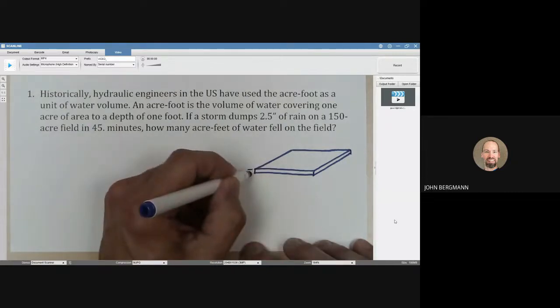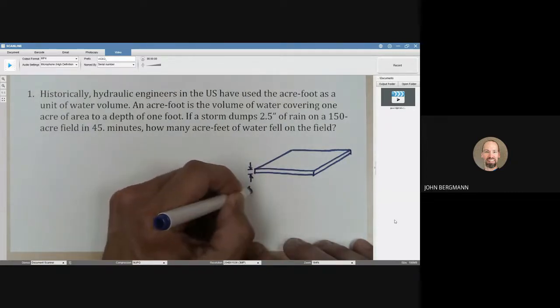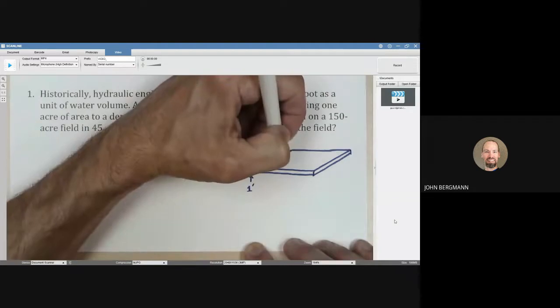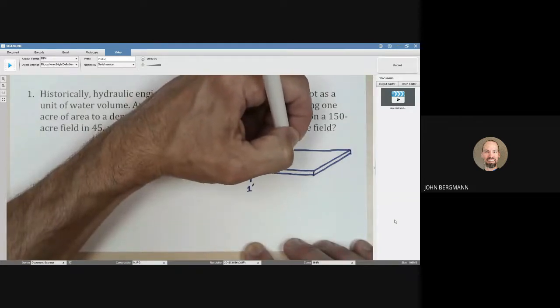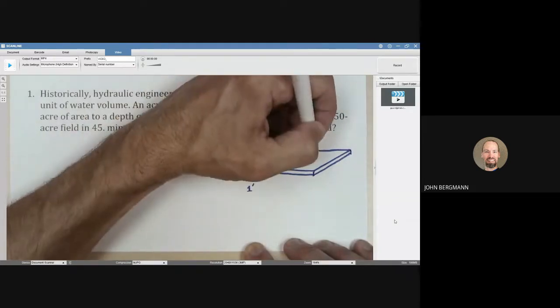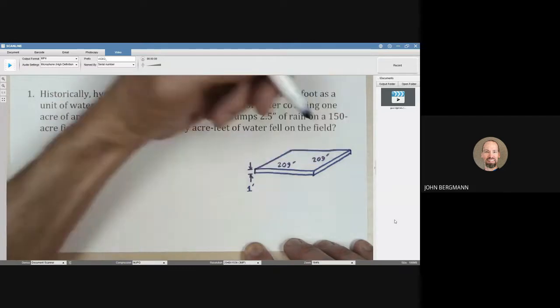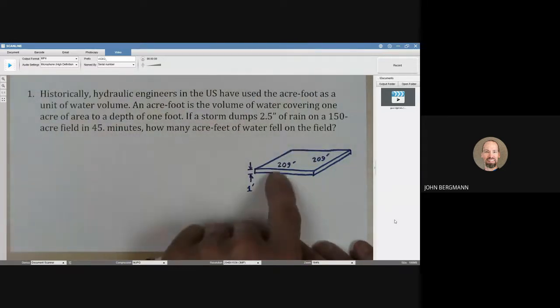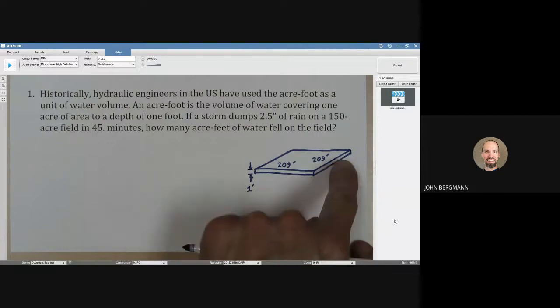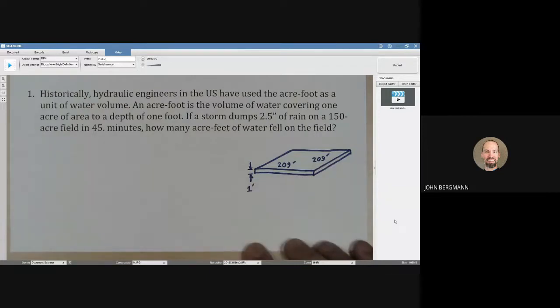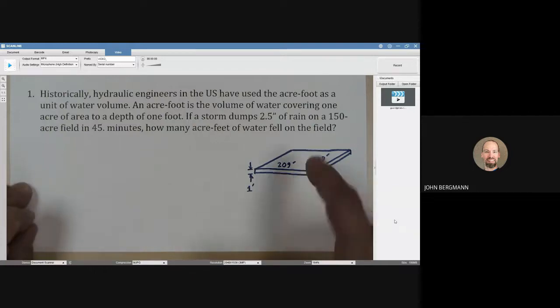And then here's a height of one foot. It's actually closer to 209 feet. It's just a hair short of that. But basically, that's an acre-foot right there. 209 feet roughly by 209 feet by one foot deep. That is an acre-foot. And we want to know how many of those fell on this field.